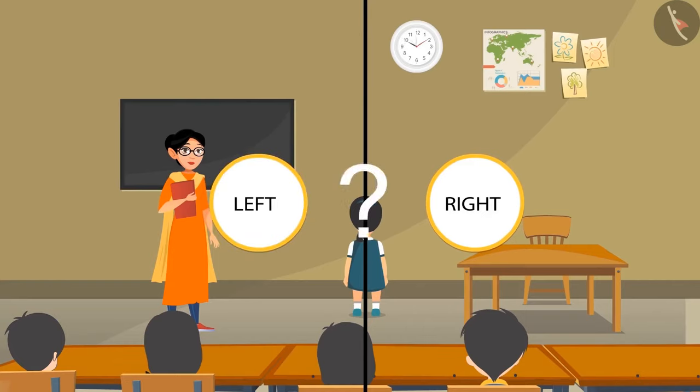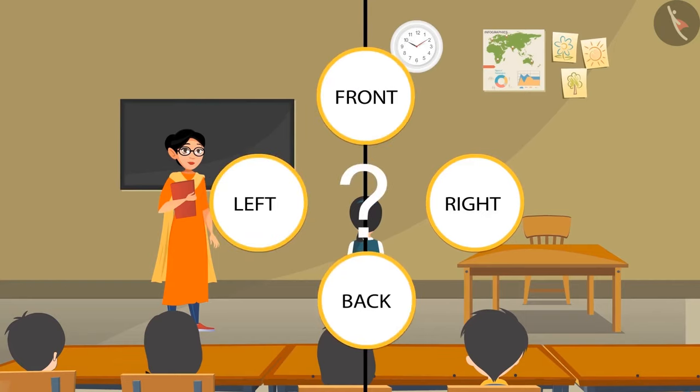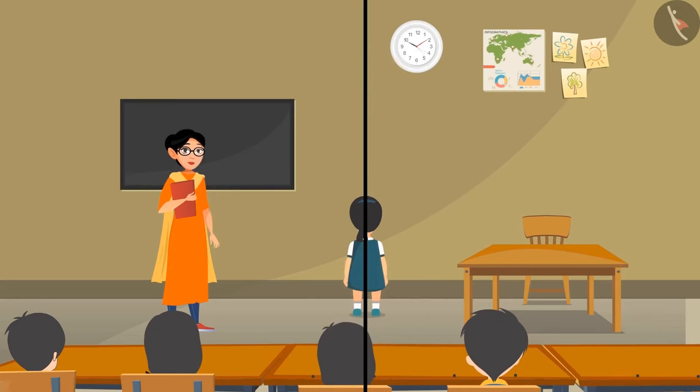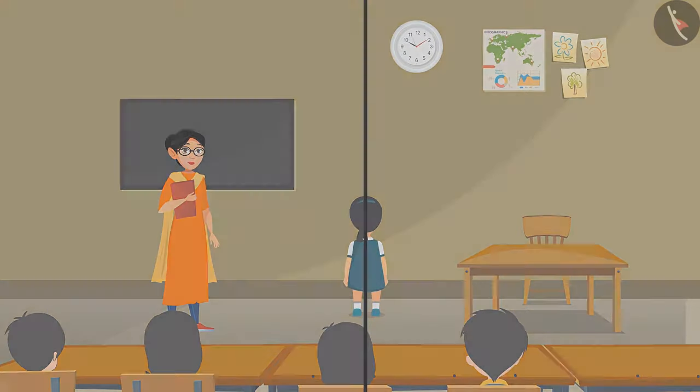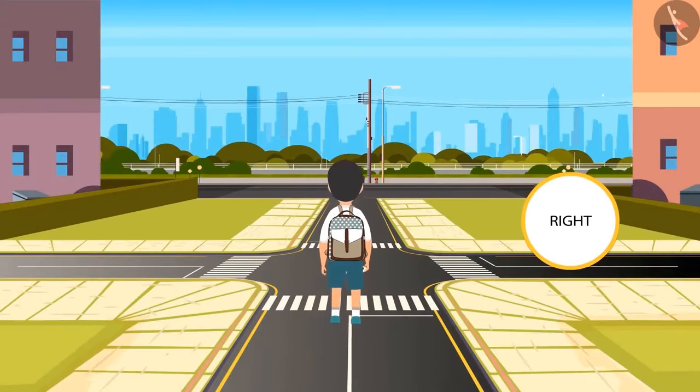Other than left and right, now think what lies in front and at the back of the girl. In front of the girl there is a wall clock. At her back are her many classmates.